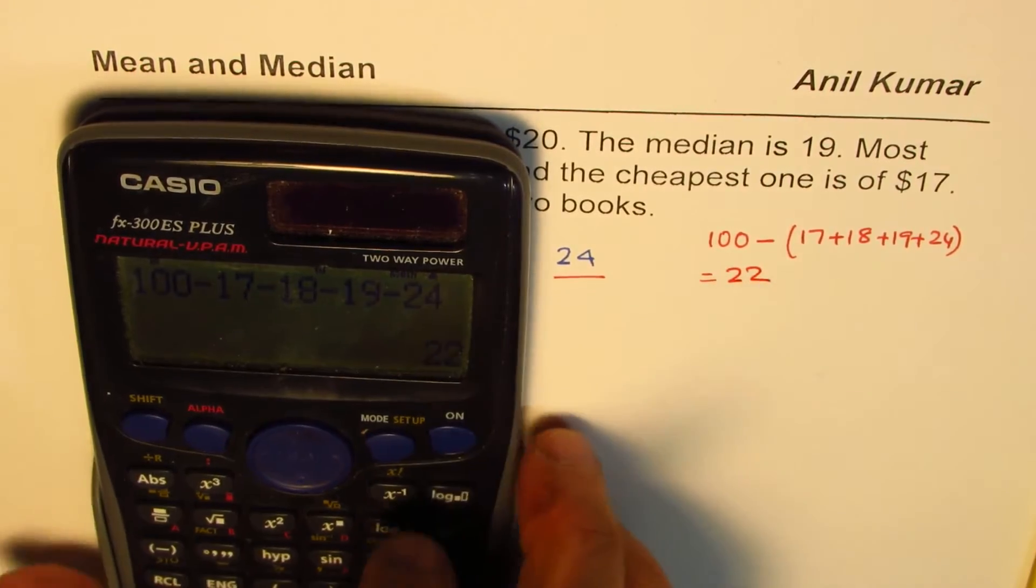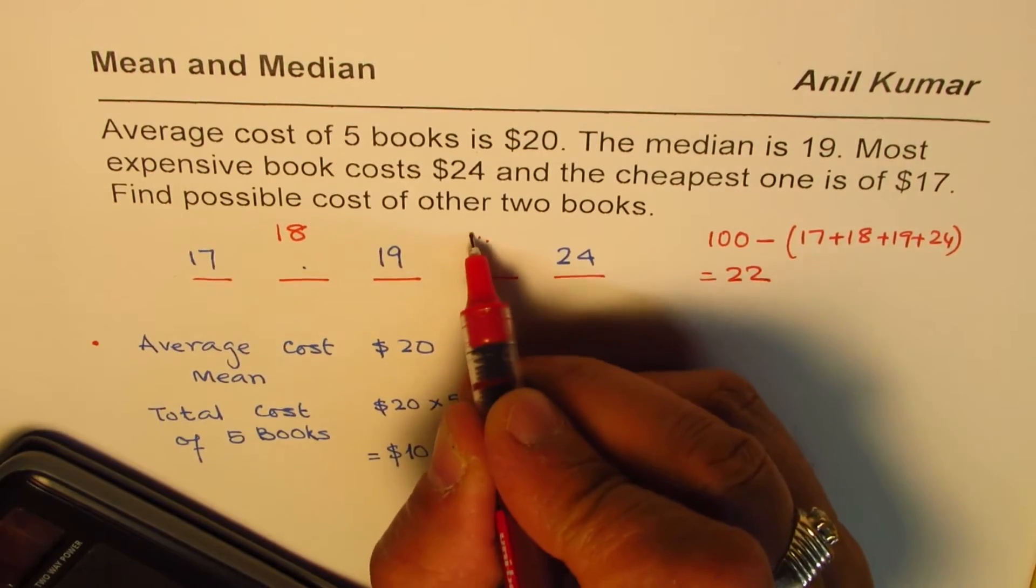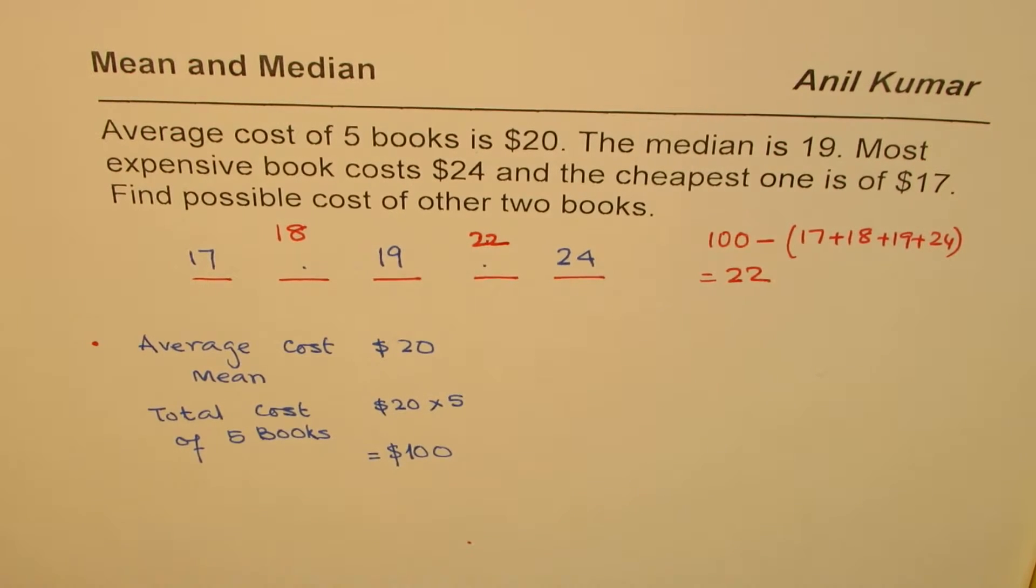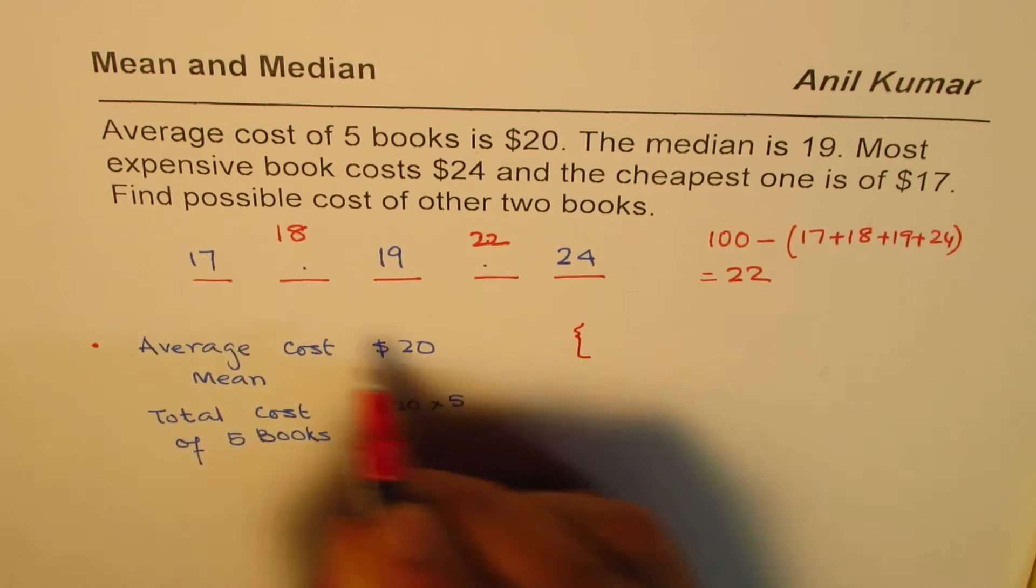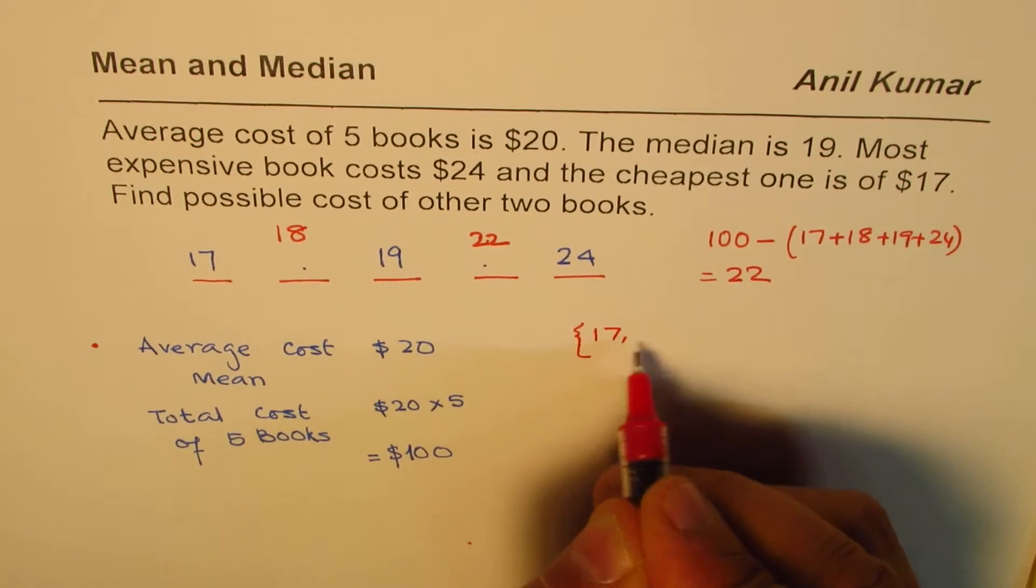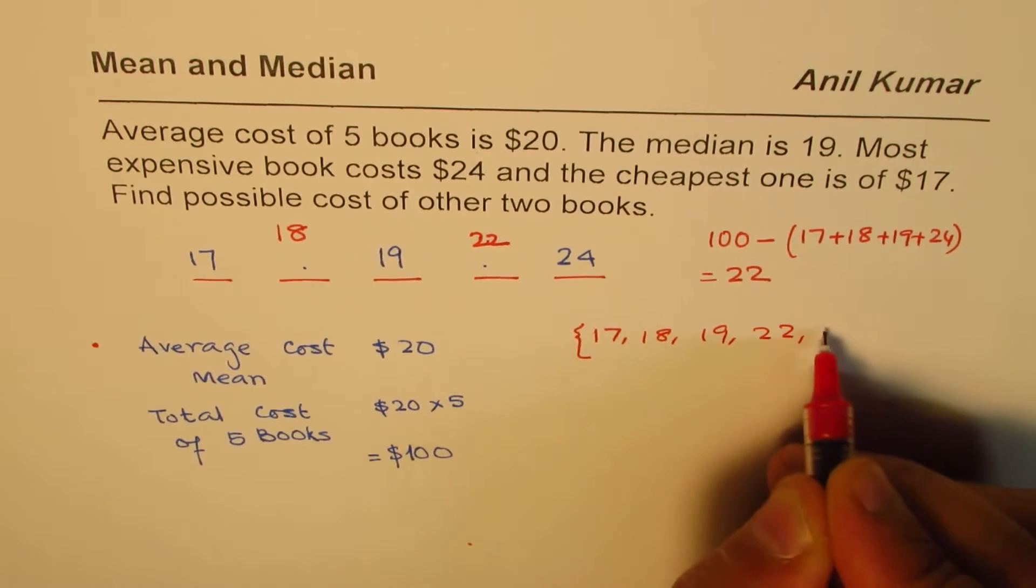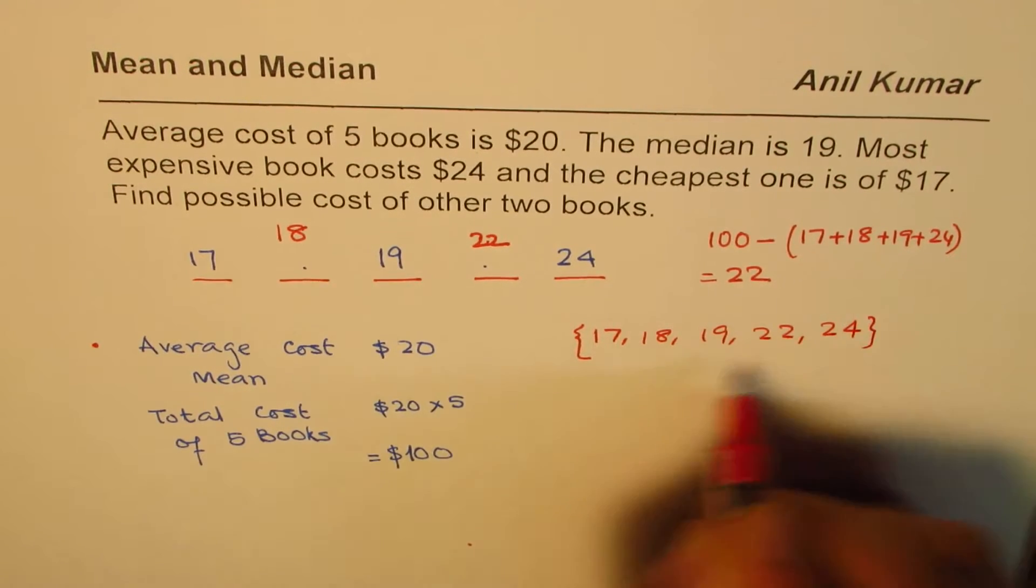We get 22. So 22 is the cost of this book. So one combination could be 18 and 22. So this set is one combination. Let me write down this set. So cost of five books will be 17, 18, 19, 22 and 24. Do you get it?